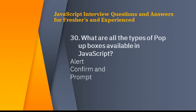What are the types of popup boxes available in JavaScript? There are three types: alert, confirm, and prompt. When you write a code for alert, it triggers when you refresh or browse a page or any event occurs, and the alert, popup, or confirm will display on the browser and web page.